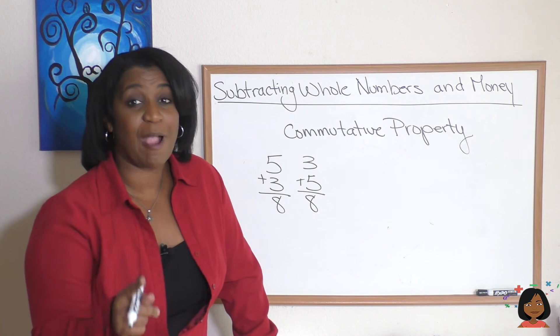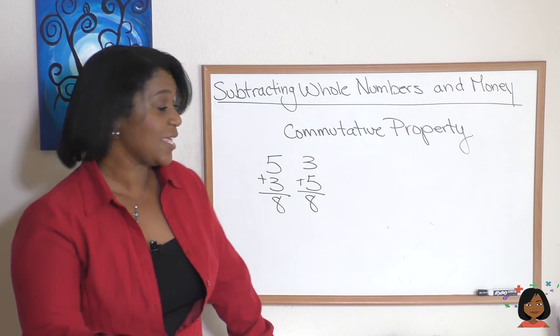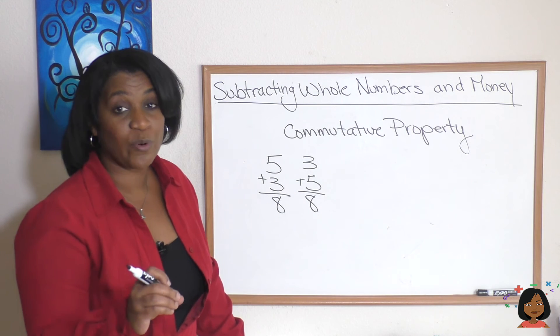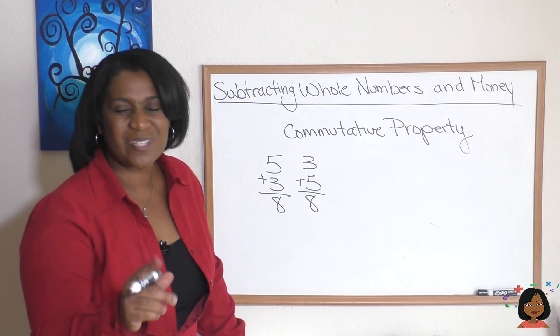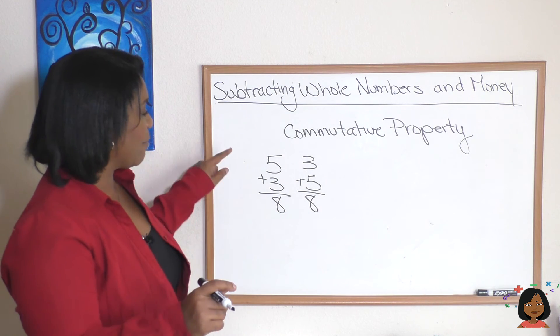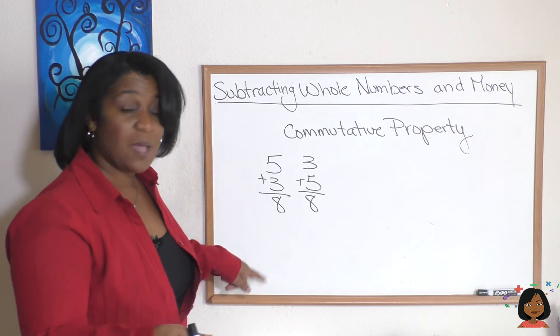You might remember that for addition I talked to you about the commutative property of addition, which tells us that it doesn't matter which order we add the addends in, we'll still get the same sum. You might remember 5 plus 3 is 8, but 3 plus 5 is also 8.